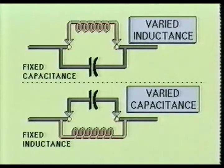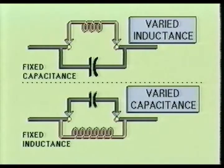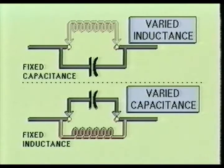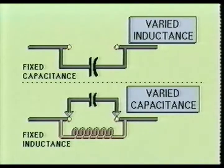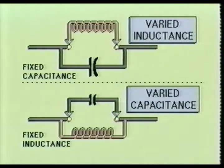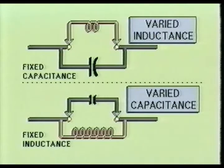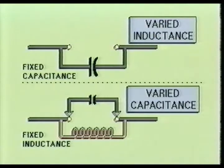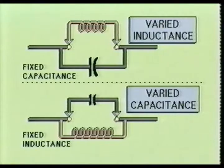Changing channels may be accomplished in one of two ways: you can change the inductance of the tuned circuit while leaving the capacitance fixed, or you can change the capacitance while leaving the inductance fixed. It used to be that the most common method was to vary the inductance of the tuned circuit through a mechanical means. In today's modern television receivers, however, it has become preferable to vary the capacitance of the tuned stage through solid state devices. We will first examine the older style mechanical tuners.